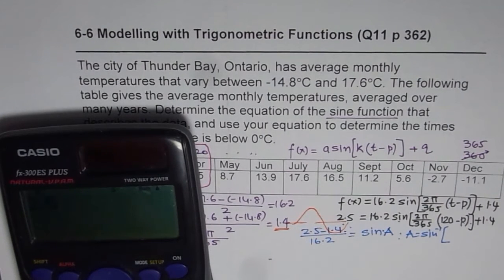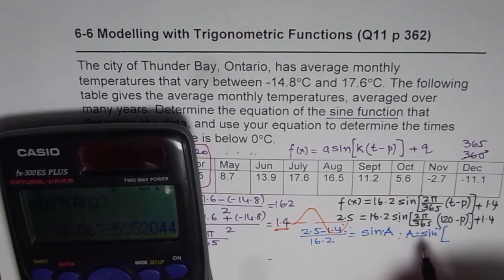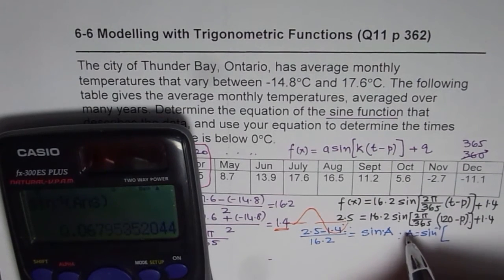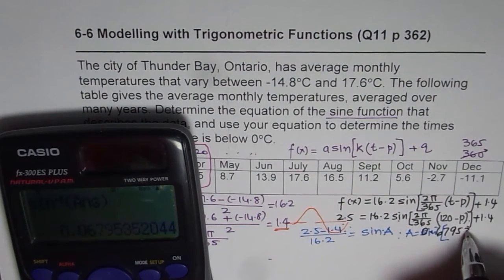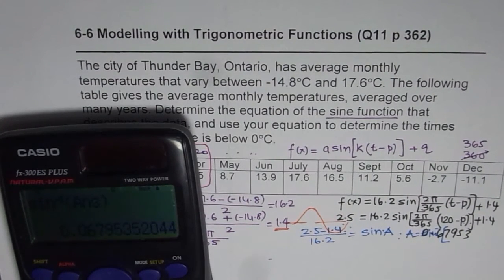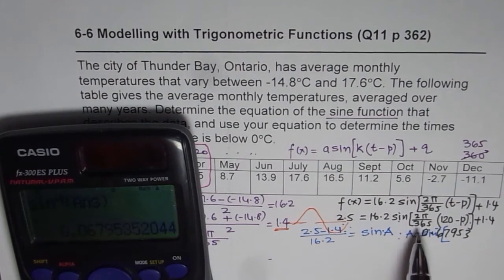So let me do this here just to show you some values which are not very difficult to calculate. Remember, your calculator should be in radians. 2.5 minus 1.4 equals to, divided by 16.2 equals to, then you do sine inverse. So shift sine function, and you can put in the answer there. And when you do sine inverse, you get value of a, which is, let me write the value of a itself. So a is 0.06795.